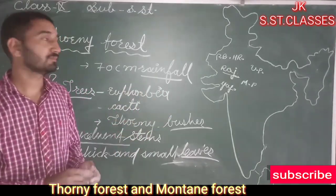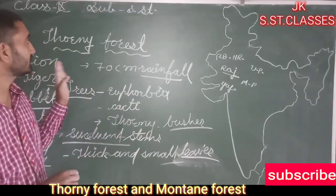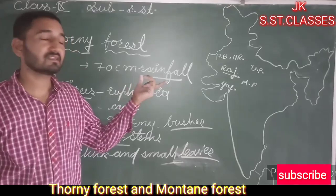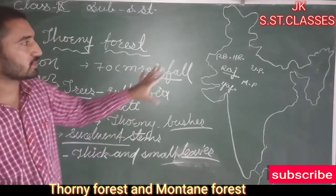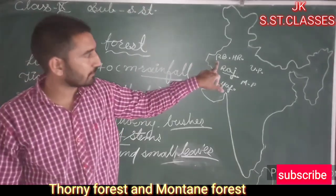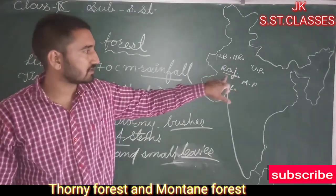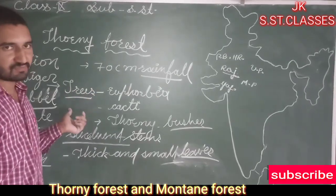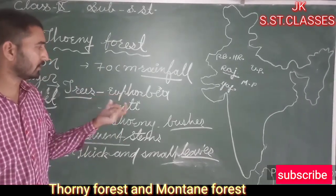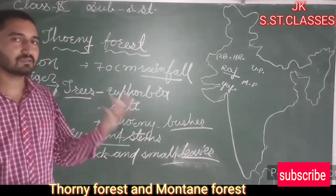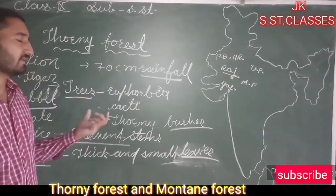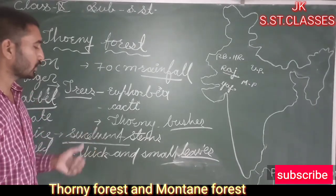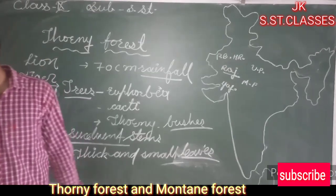To summarize: thorny forests and scrubs are present in areas having rainfall less than 70 cm, related with the northwestern part of the country — Punjab, Haryana, UP, Madhya Pradesh, and Kutch. Major trees are Euphorbia, Cacti, thorny bushes and scrubs. Key characteristics include succulent stems with thick and small leaves for minimizing evaporation.